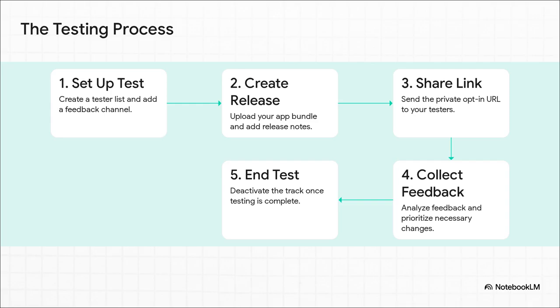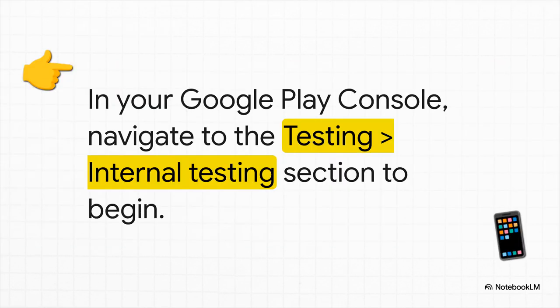The entire testing process really just boils down to these five simple steps: set up the test, create the actual release, share it out, collect all that great feedback, and wrap it all up. Go ahead and log into your Google Play Console and pick your app. Then, over on the left-hand menu, you're going to find the testing section — just click on that and select internal testing to get the ball rolling.